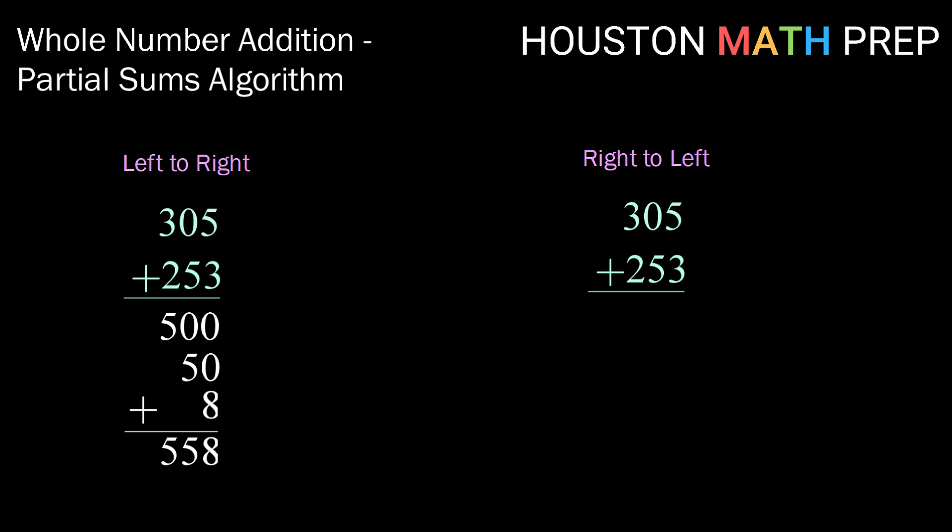Okay, now let's look at that same problem from the right to the left. So this is just a preference thing. Now this time we're going to start on the right hand side. So we're going to be starting with the ones place. 5 plus 3 again gives us 8.